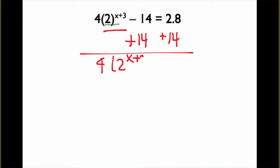And then what you need to make sure of is you can't multiply that 4 and 2 together because the 4 is not raised to the exponent. So, next, we'll divide each side of the equation by 4. And we have the expression 2 to the x plus 3 is equal to 4.2.